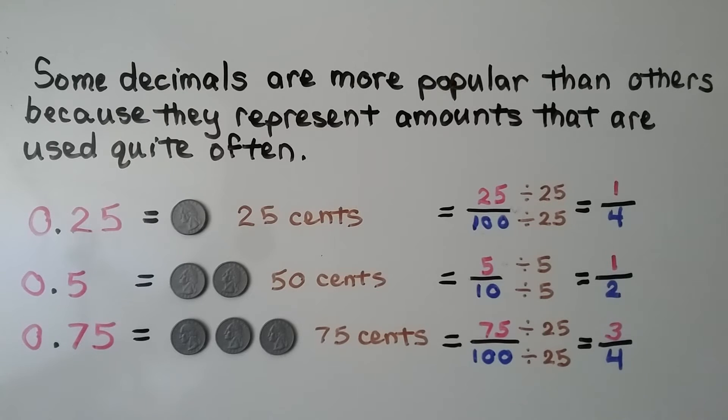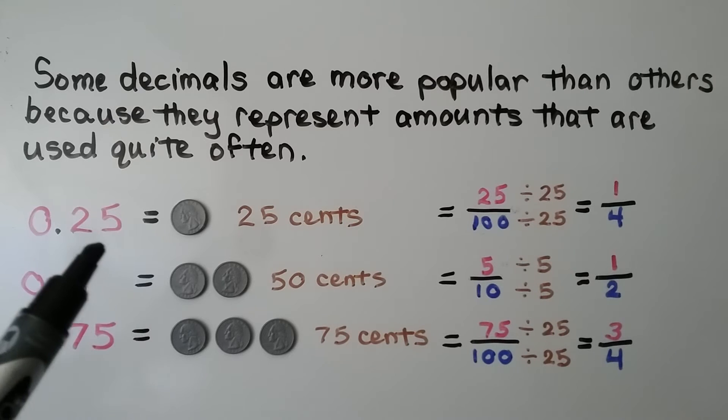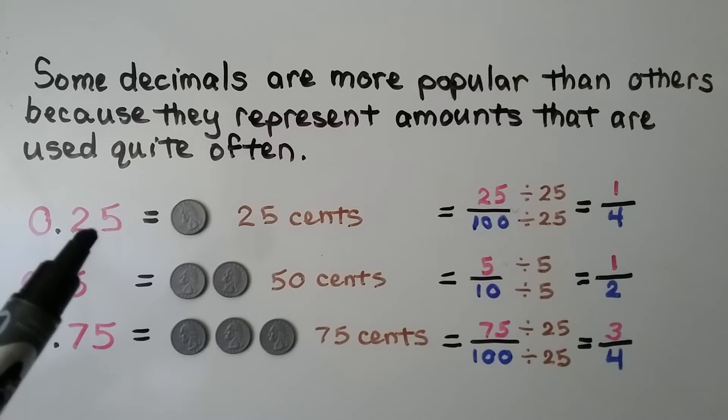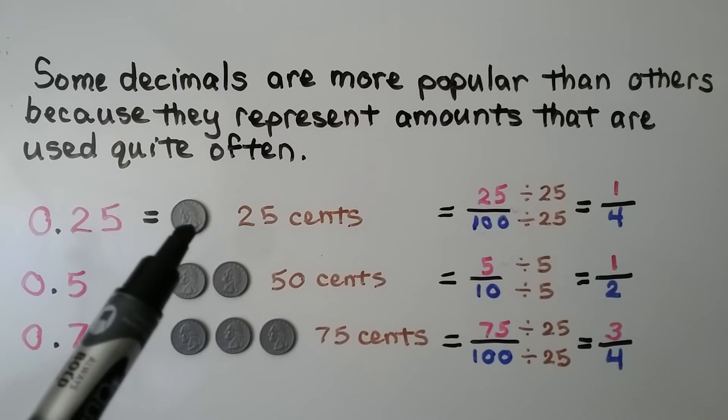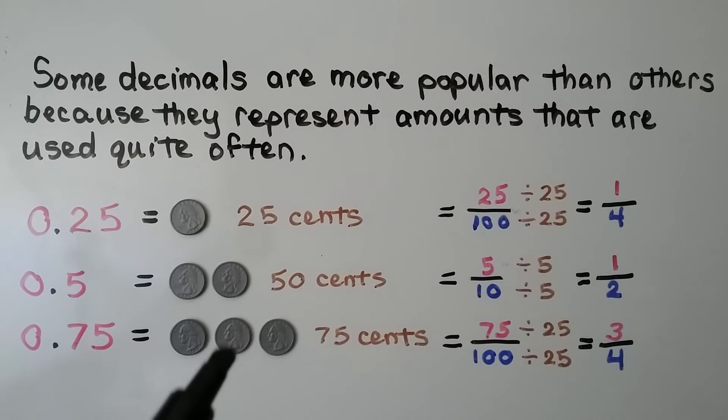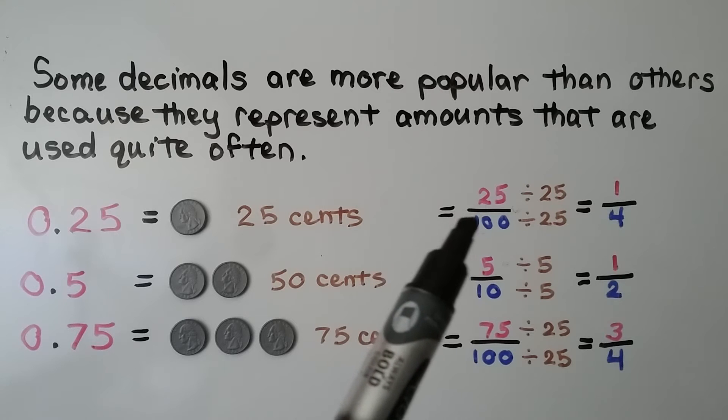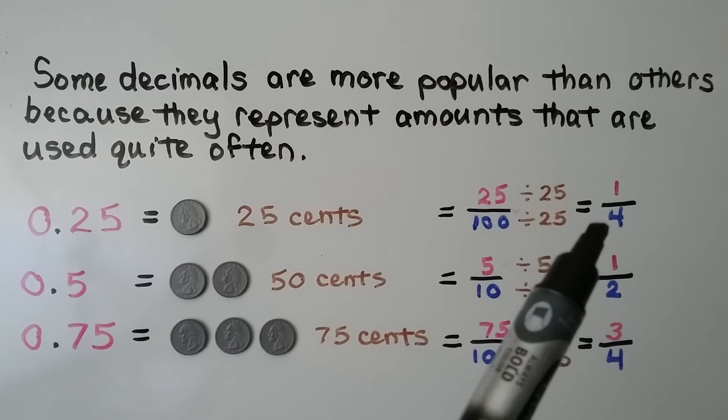Some decimals are more popular than others because they represent amounts that are used quite often. We have 25 hundredths. We can think of it in terms of money. That would be 25 cents from a dollar. It would be a quarter. And 25 hundredths is equal to 1 fourth.